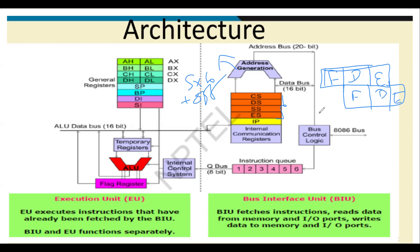The 8086 has a bus unit and bus control logic. The 8086 can operate in two modes: minimum mode and maximum mode. All instructions are put up in a queue — there are six queues. The execution unit fetches and executes data, while the bus interface unit handles all memory read and write operations.